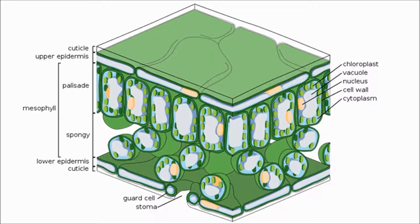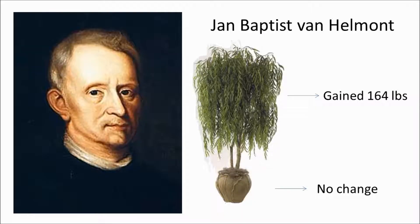Underneath the palisade layer is a region called the spongy mesophyll. This has lots of air gaps to allow the diffusion of gases in and out of the leaf. Now let's look at some really clever but simple experiments that were done in the middle of the 17th century. Jean Baptiste van Helmont decided to test the Greek idea that a plant gets more massive because it uses the minerals from the soil.